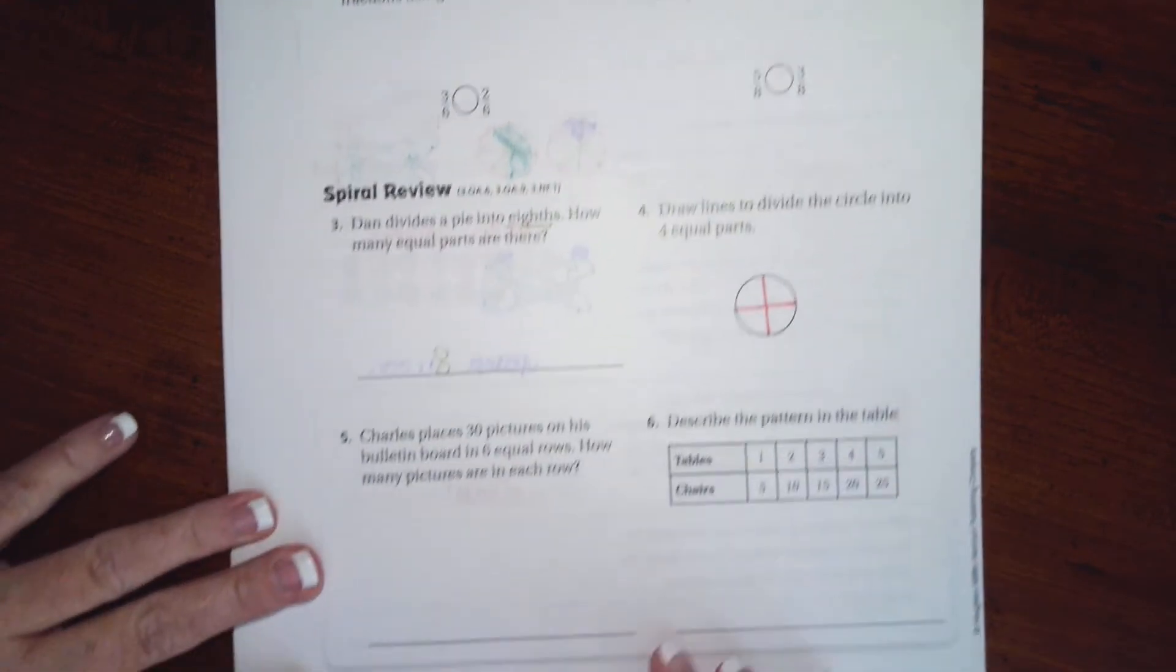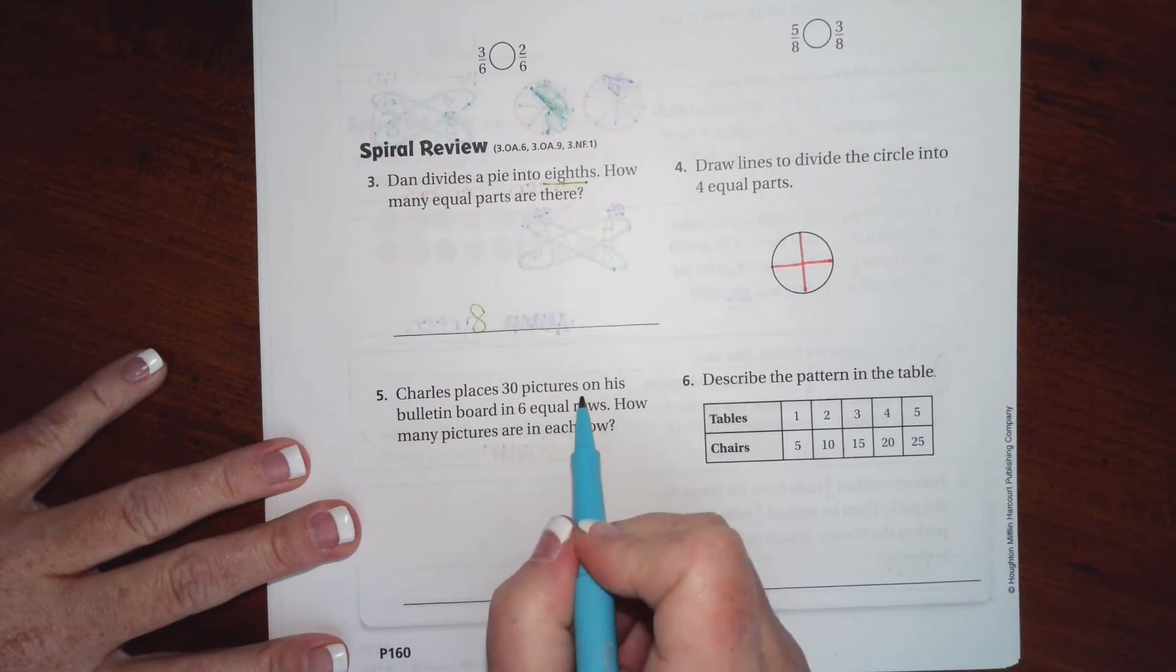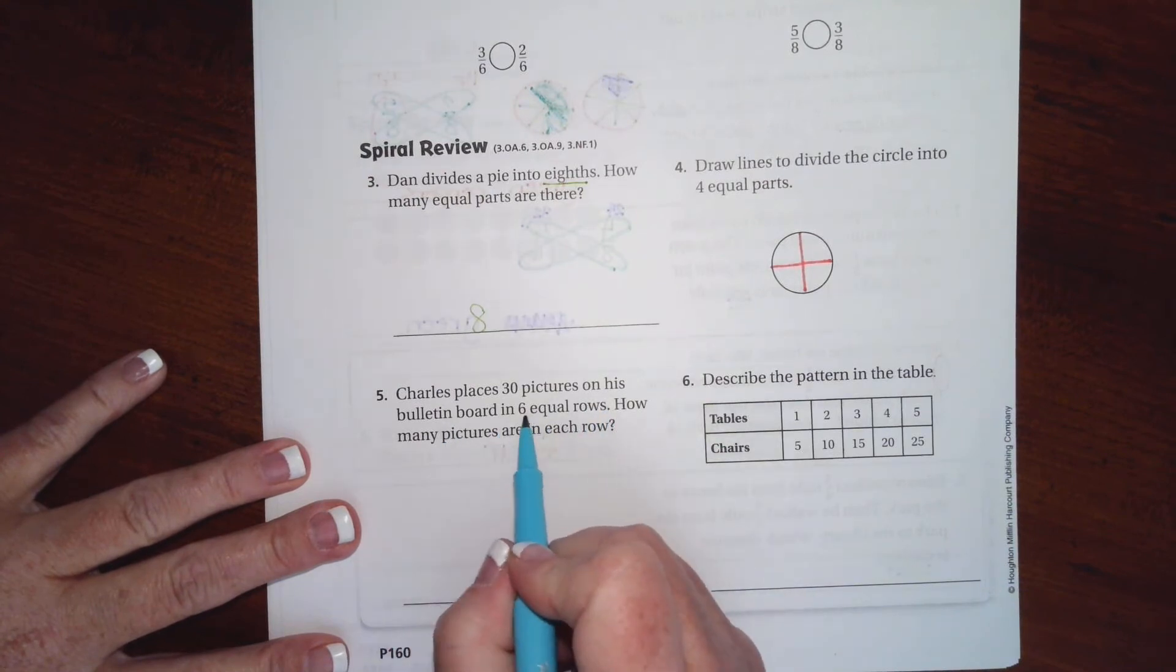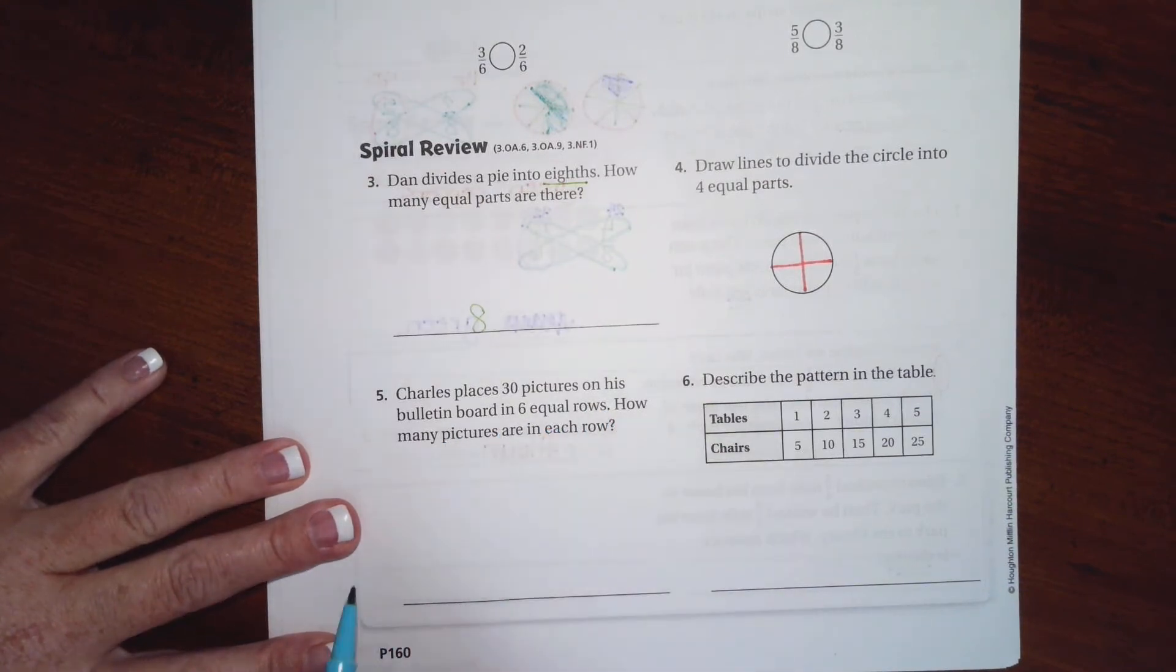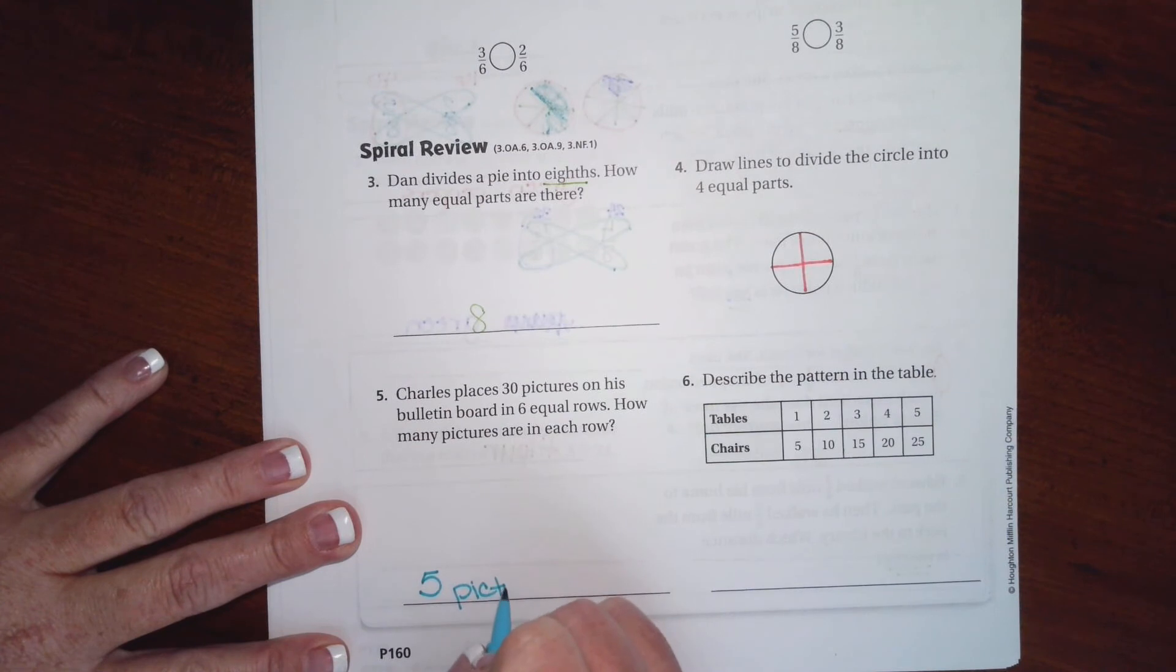All right. Charles places 30 pictures on his bulletin board in 6 equal rows. How many pictures are on each row? Well, that means 30 divided by 6, or 6 times what is 30? Well, we know that 6 times 5 is 30. So 5 pictures.